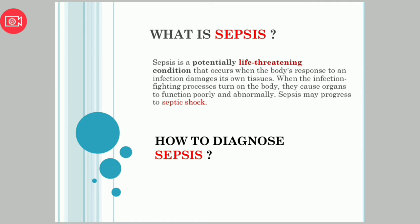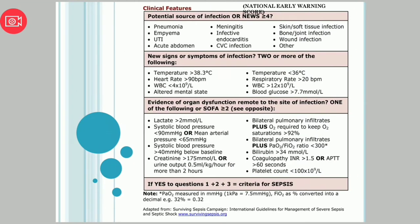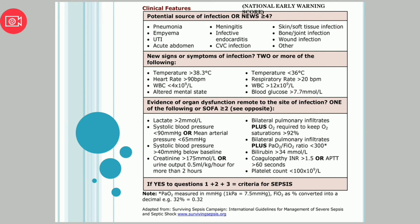The main question is how to diagnose sepsis. We look at the clinical features — signs and symptoms — to determine if a patient is in sepsis or going into septic shock. The first criterion is potential sources of infection, which may include pneumonia, empyema, urinary tract infection, acute abdomen, meningitis, infective endocarditis, CVC insertion-related infection, skin and soft tissue infection, bone or joint infection, wound infection, or other sources.